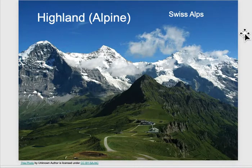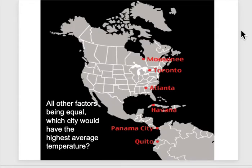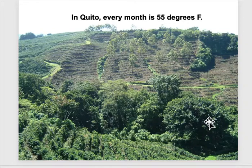The highland or alpine climate can vary quite a bit depending on the latitude of the mountains, but generally being at high elevation makes it much cooler — it sort of makes it seem like you're at a higher latitude than you actually are. For example, Quito, Ecuador is right on the equator, so you'd expect a hot equatorial climate, but every month of the year in Quito has an average temperature of about 55 degrees. That's because it has a very high elevation — it is a highland climate.